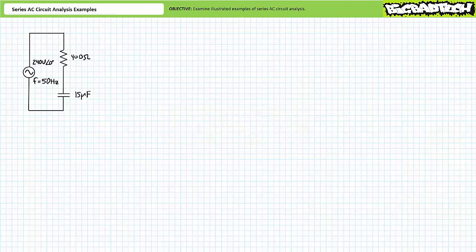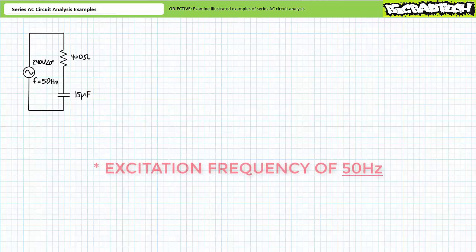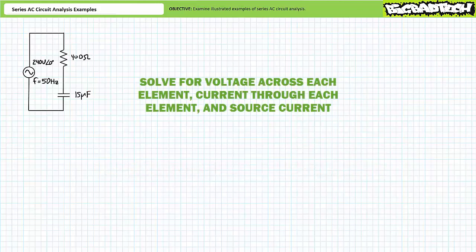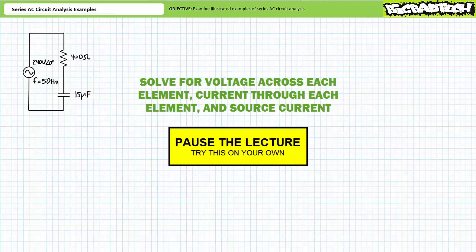Our first illustrated example problem features a series combination of two elements. The first element is a 400 ohm resistor and the second element is a 15 microfarad capacitor. The source has an effective value of 240 volts and an excitation frequency of 60 hertz. We're being asked to solve for the voltage drop across each element, the current through each element, and the source current. By all means, pause the lecture and try this on your own.